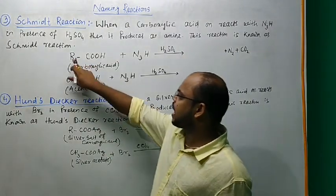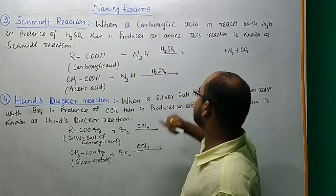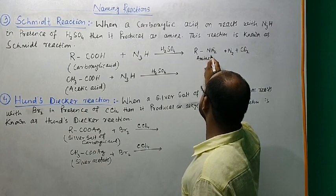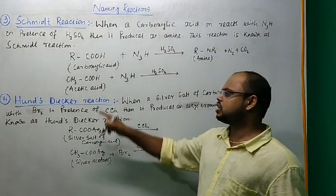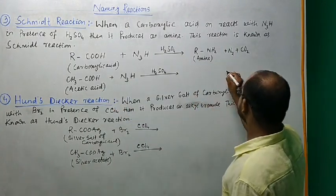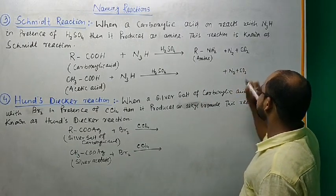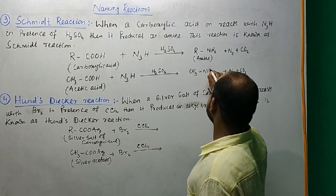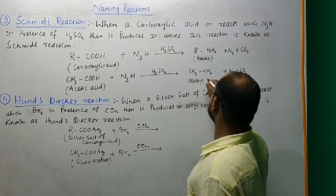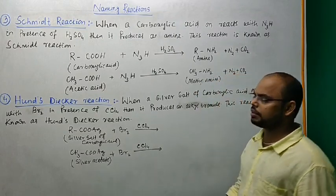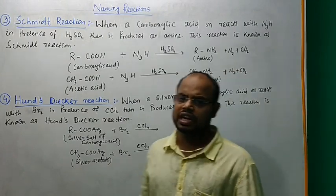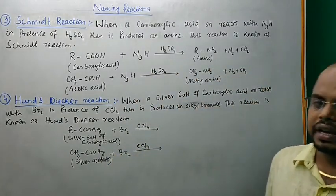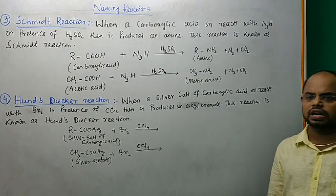The carboxylic acid R-COOH plus N2H4 produces R-NH2, this is amine, plus CO2. For example, CH3-COOH produces CH3-NH2, this is known as methyl amine. In presence of sulfuric acid then it produces amine, this reaction is known as Schmidt reaction.